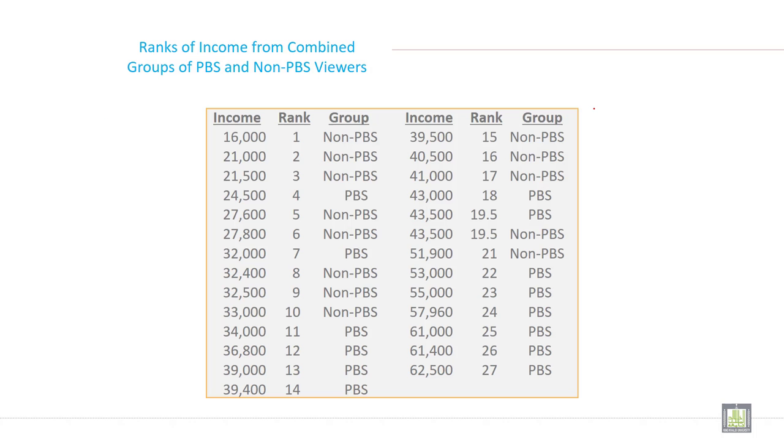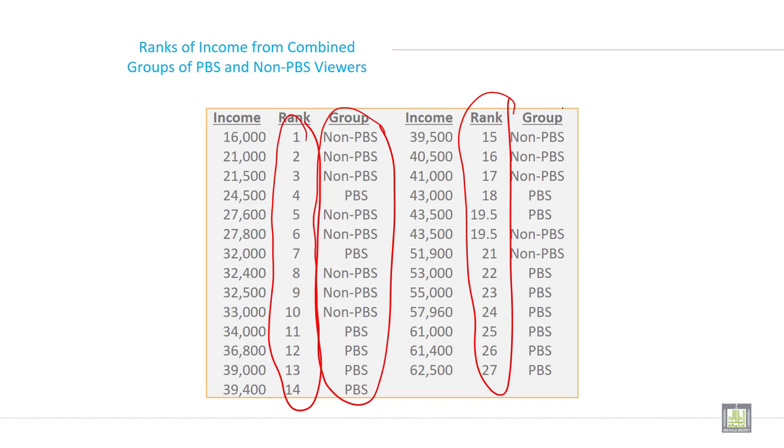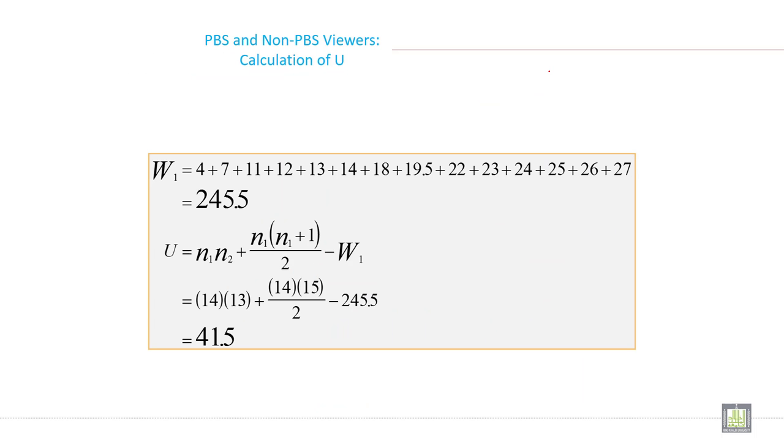This is the raw data. Now what we can do is just put ranks for non-PBS and PBS both. So we make for PBS and non-PBS what will be the rank for PBS and non-PBS ranking and then group. Then calculate, here it is W1 is equal to 245.5 while mu_u is equal to 41.5.